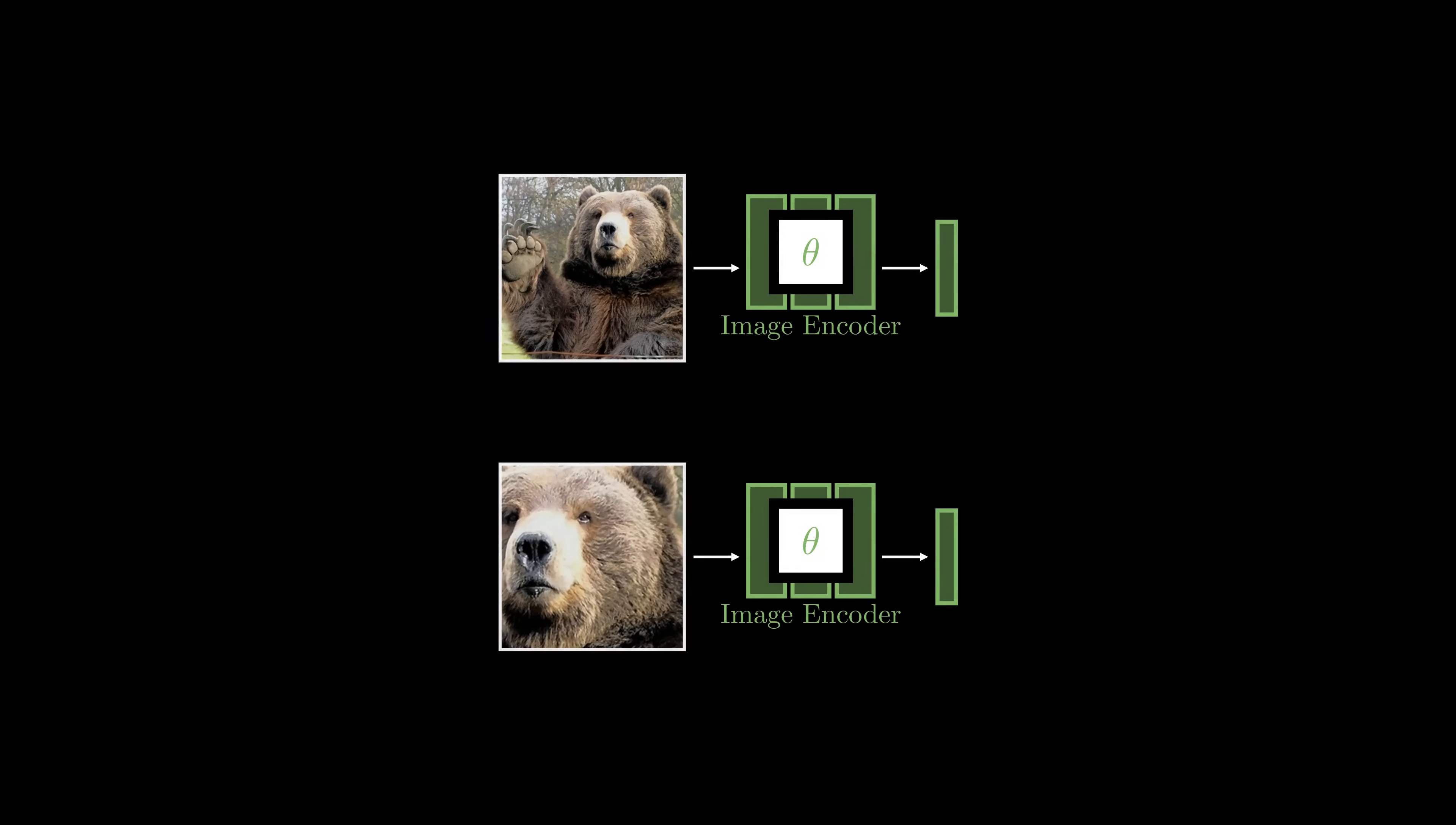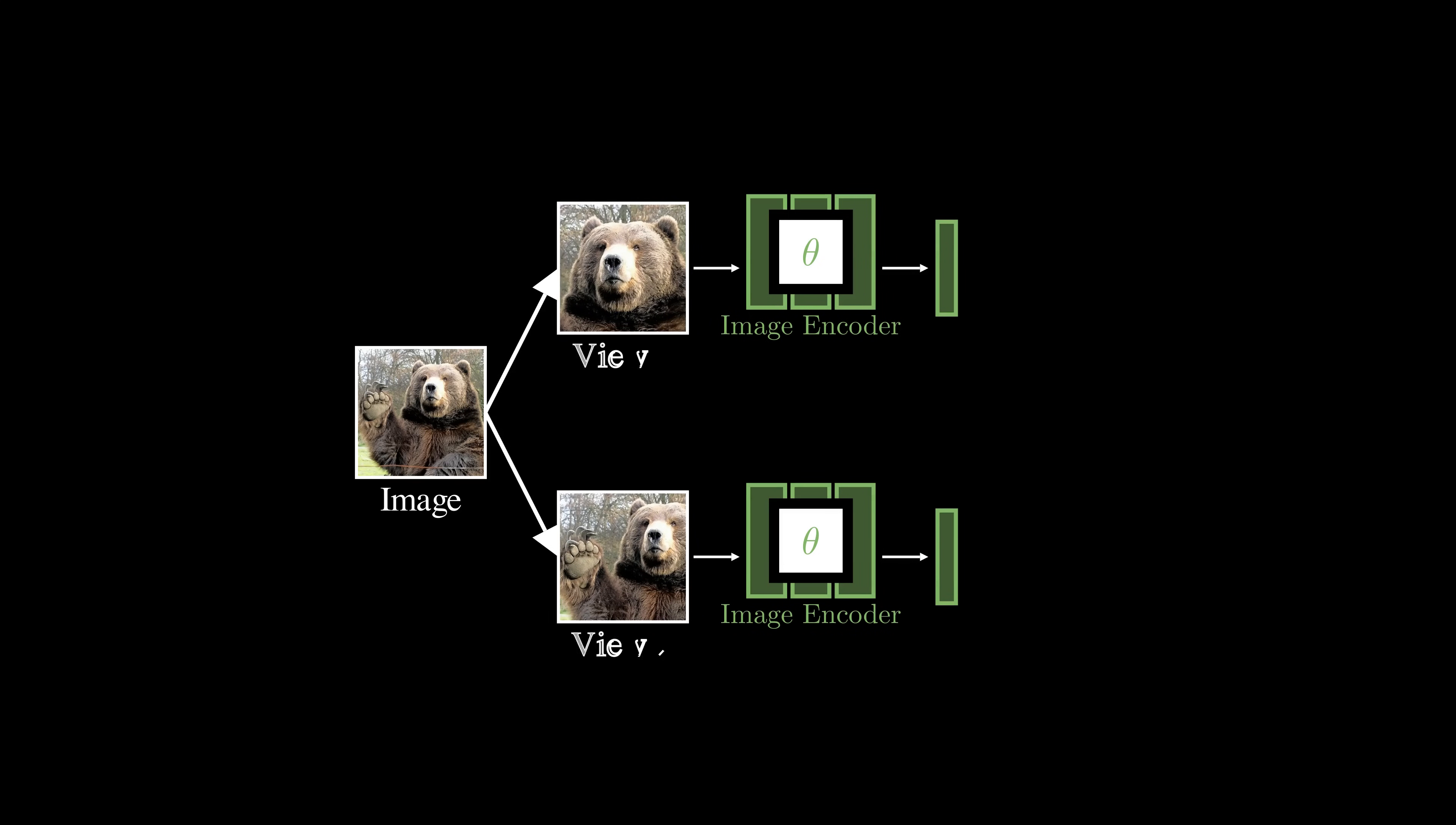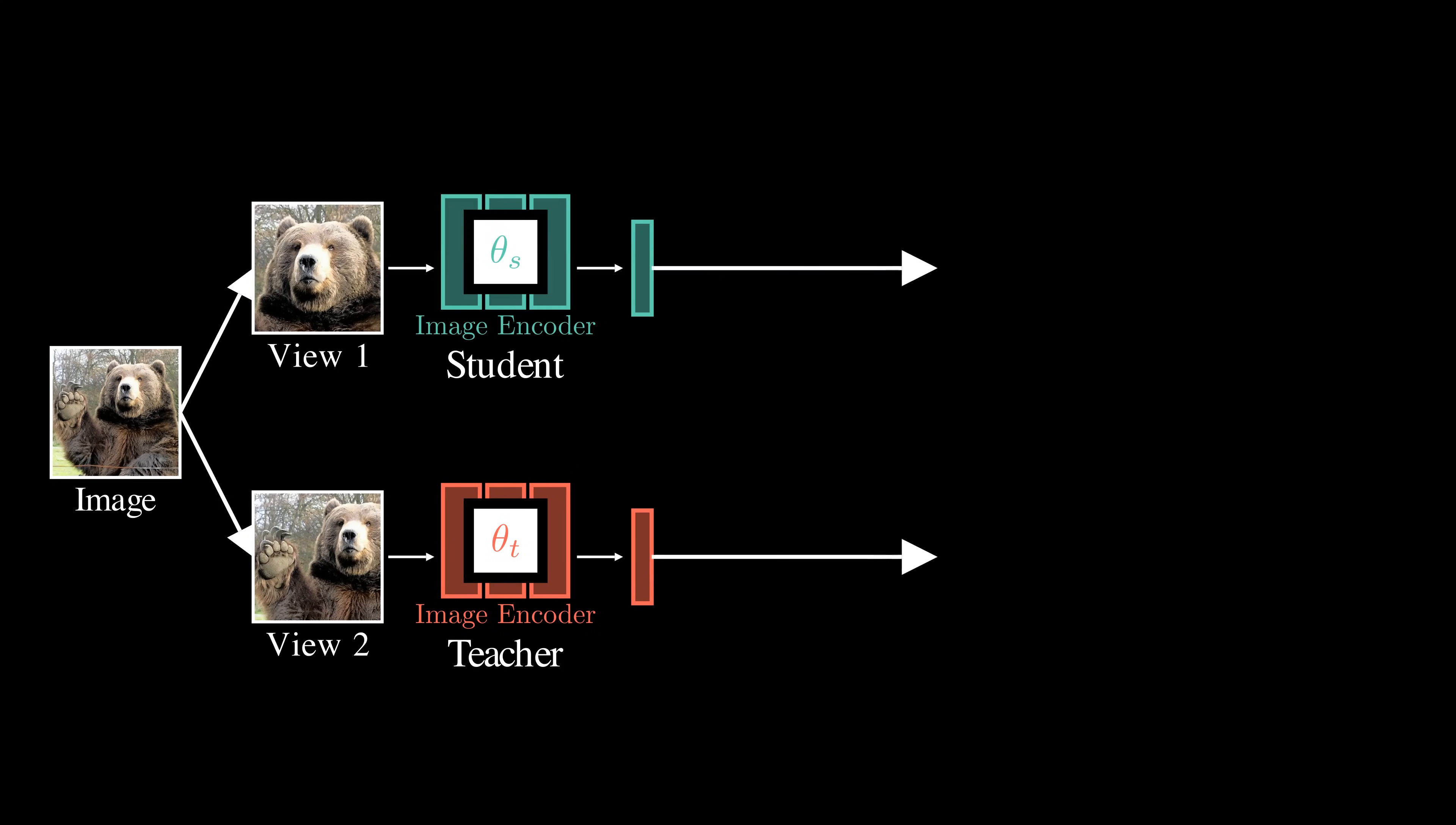To tackle this challenge, let's look at how it could work with a single image. Given an input image, we create two augmented views like different crops. We call the image encoders as student and teacher models. We extract features, feed them into a projection head to obtain logits, and then apply a softmax function to produce probability distributions. With this setup, we train the student network to match the teacher's predictions by minimizing the cross-entropy between them.